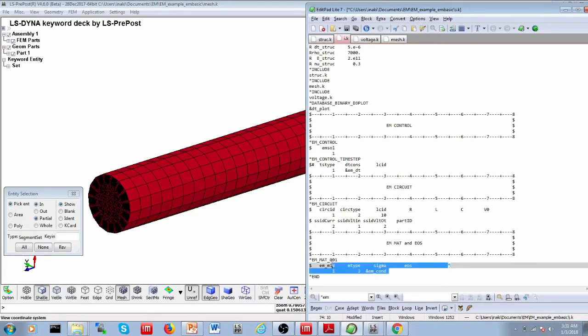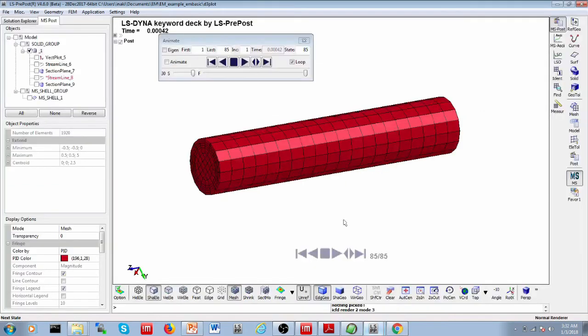And then we have our material keyword, where we have defined our electromagnetic conductivity as a property of the material, of the rigid material. And then we have defined our circuit and we have associated the load curve number 10 with an imposed voltage between the two outlets, between the plus and minus of our rod.